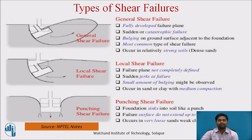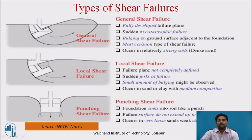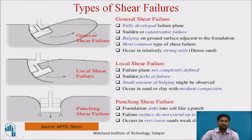General shear failure occurs when the friction angle is greater than 36 degrees. The failure plane is well defined, and bulging is occurring between the footing and the ground surface. Bulging on the ground surface is adjacent to the footing, and it is a quite common type of shear failure in all types of soil sample.